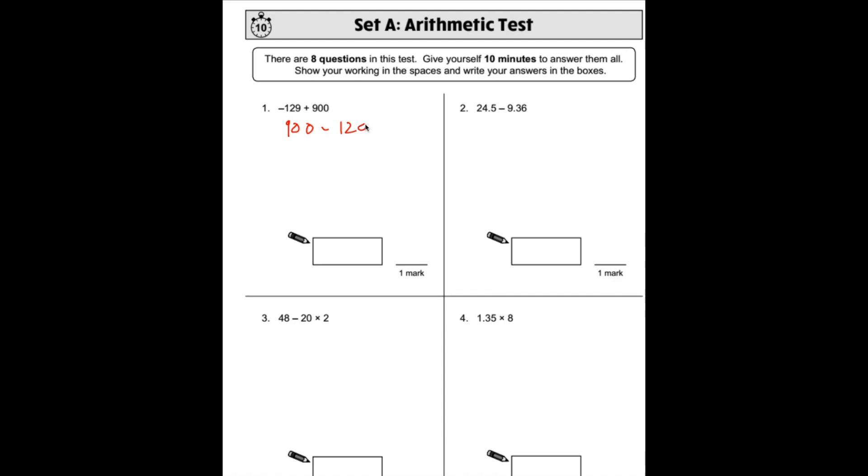900 subtract 129. Let's do 900 minus 130 and then we can add 1 on at the end to save some time. 900 minus 100 would be 800, minus the 30 would be 770. We're going to add one more back onto that, so it would be 771, our answer there.